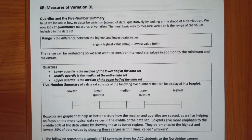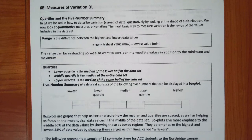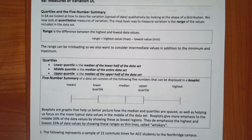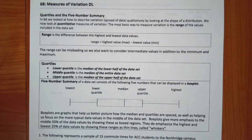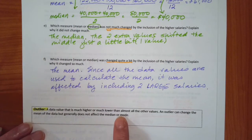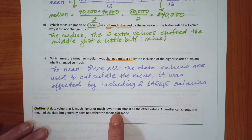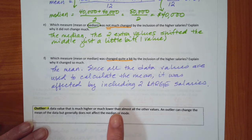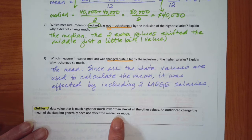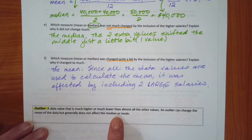Hi everyone. We're going to do 6B, which is Measures of Variation. As we do it, there are a couple of things I want us to recall from last time. The first is when we talked about an outlier — a data value that is much higher or much lower than the other values — and it can change the mean a lot more than it generally will affect the median or the mode.